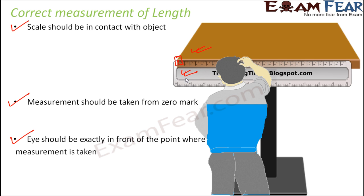Many times it happens that the scale is broken from one end, making it difficult to start the measurement from the zero mark — the zero mark portion itself may be broken. In that case, if you start from 1 or 2, you have to compensate on the other side. For example, if you started from 2 and the reading comes out to be 29 or 30, you need to subtract those two centimeters from the measurement to compensate for the broken portion and get a precise measurement.